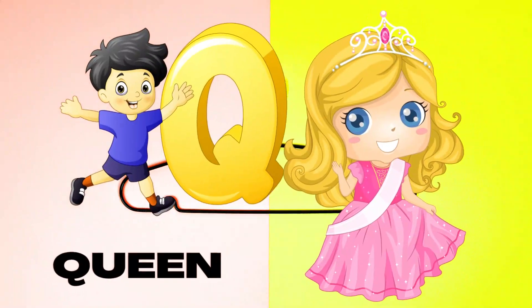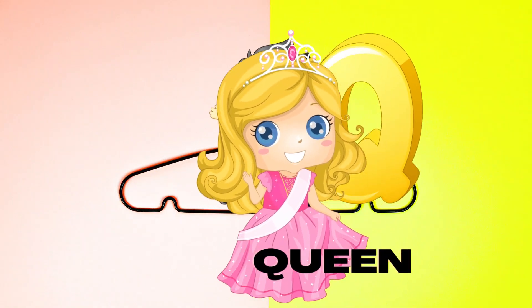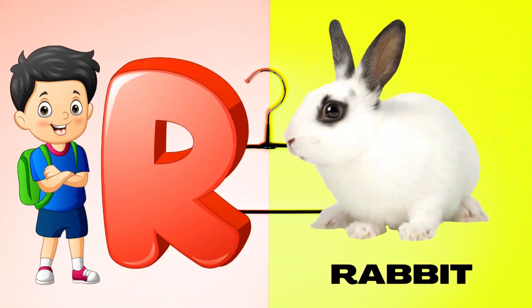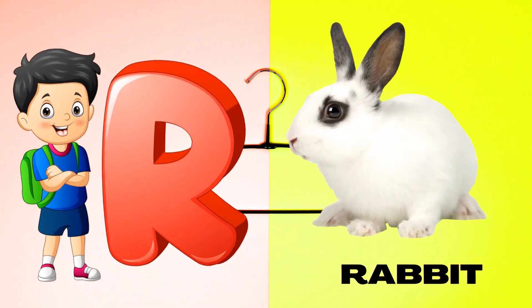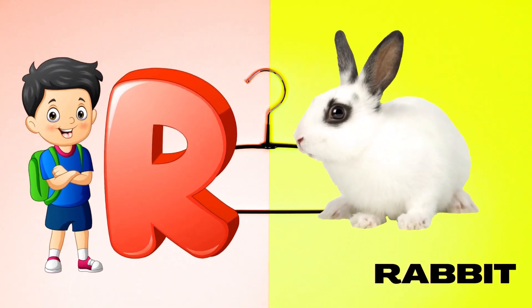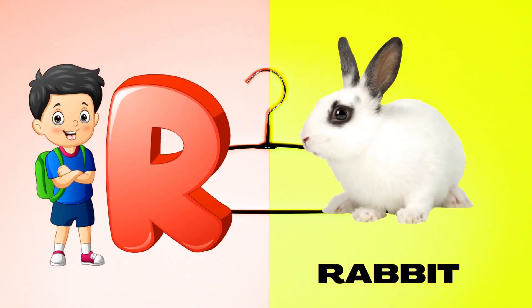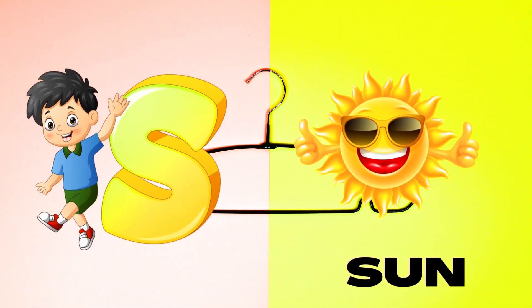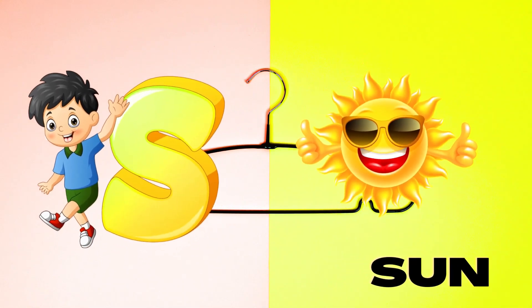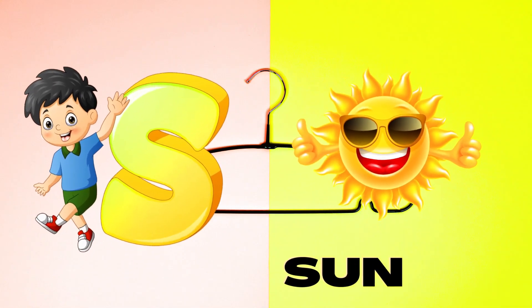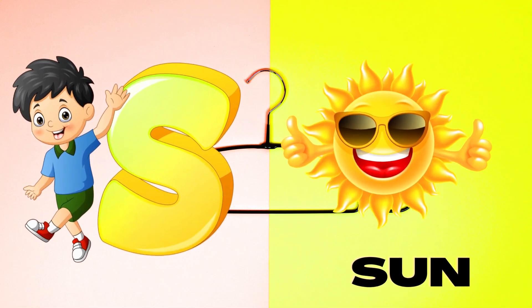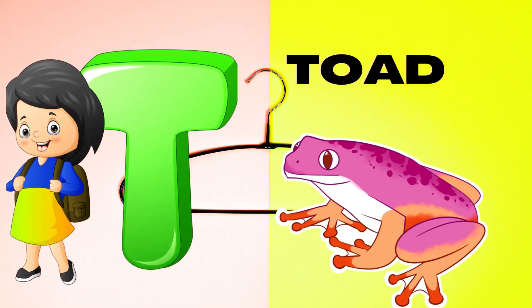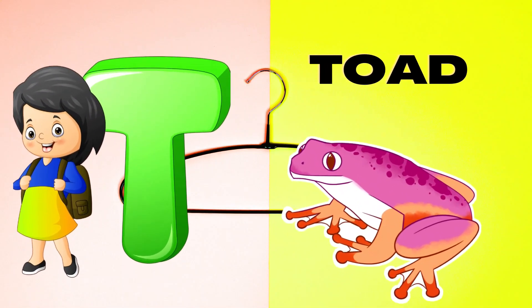Q is for Queen, Q-Q-Queen. R is for Rabbit, R-R-Rabbit. S is for Sun, S-S-Sun. T is for Toad, T-T-Toad.